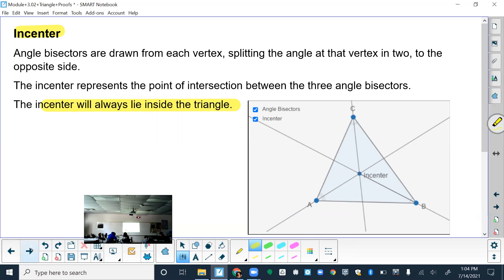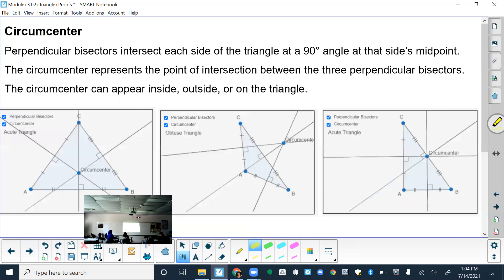Circumcenter is the next one. So perpendicular bisectors. It represents a point of intersection between three perpendicular bisectors. And that can appear inside, outside, or on the triangle.